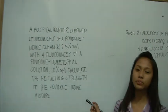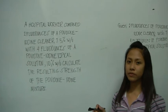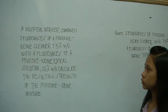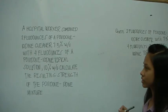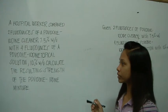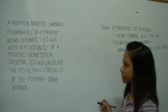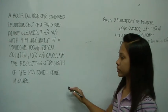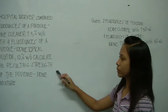Now we will proceed to the other problem which we will use the method of alligation. A hospital worker combines 2 fluid ounces of a Povidone-Iodine cleaner 7.5% w/v with 4 fluid ounces of a Povidone-Iodine topical solution 10% w/v. Calculate the resulting strength of the Povidone-Iodine mixture.